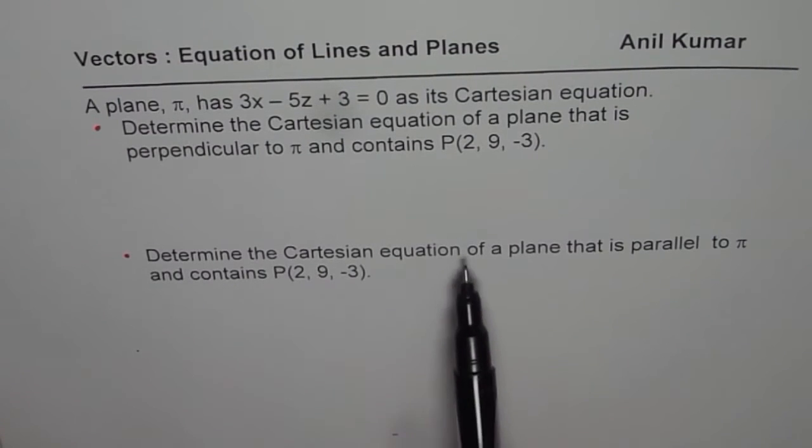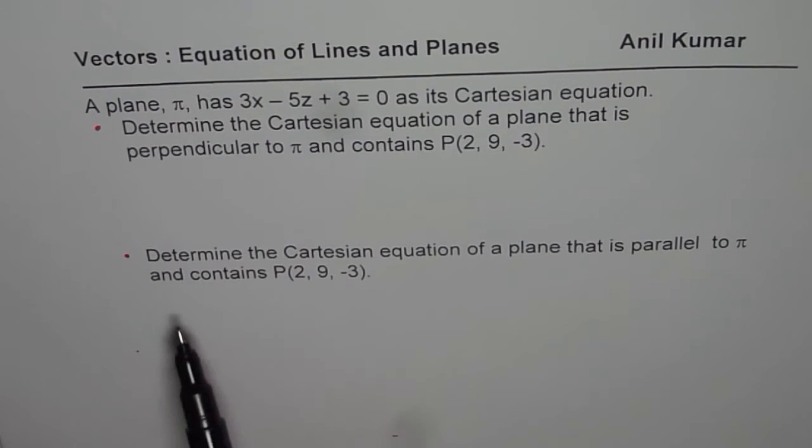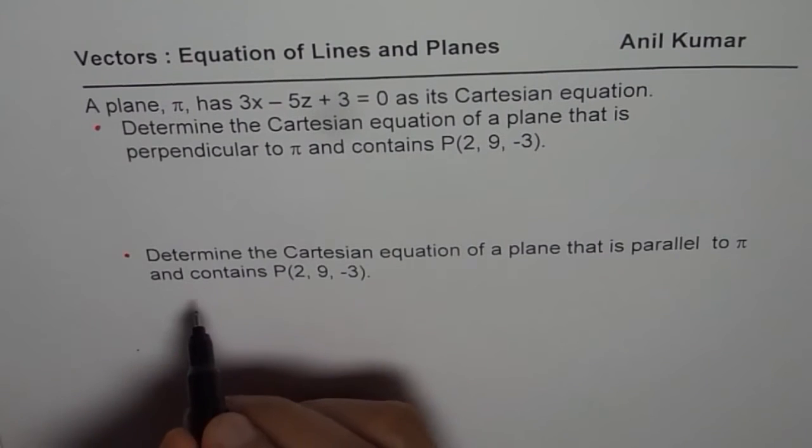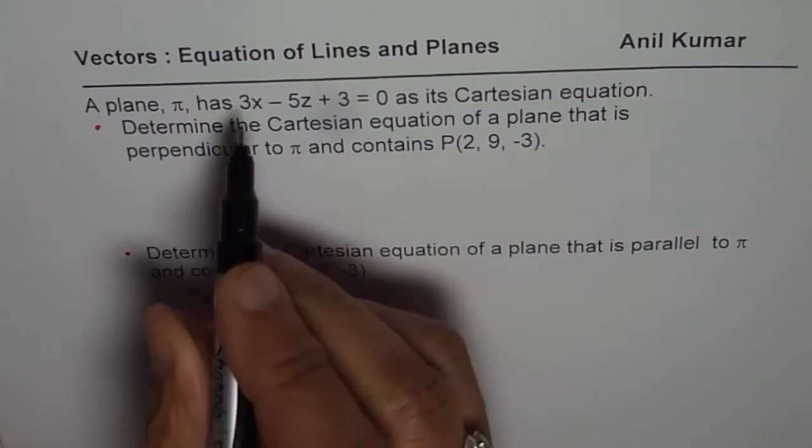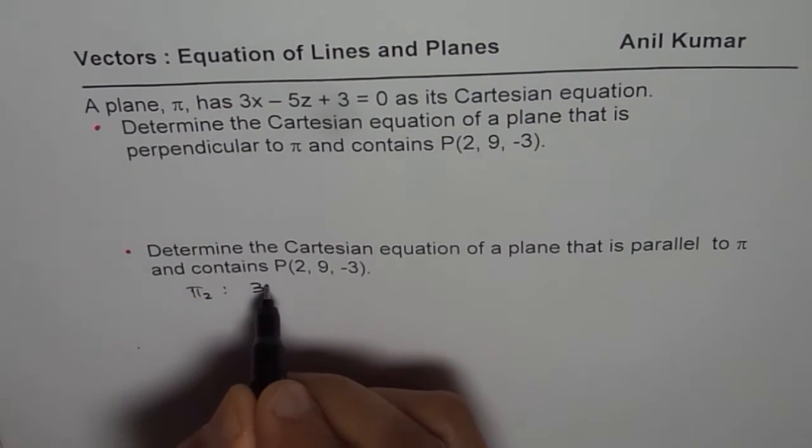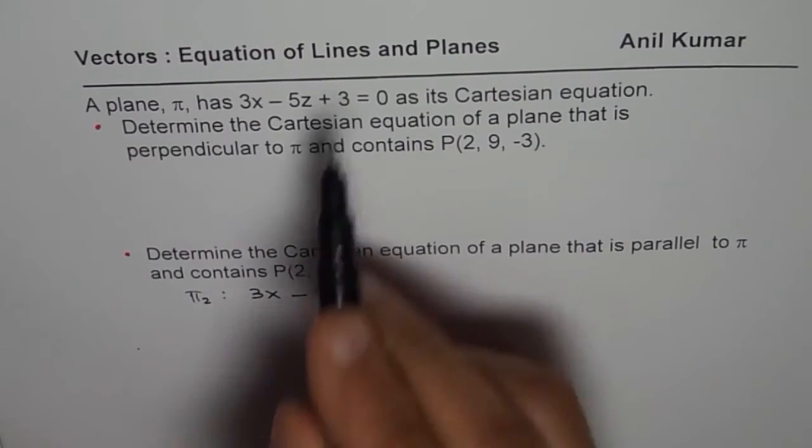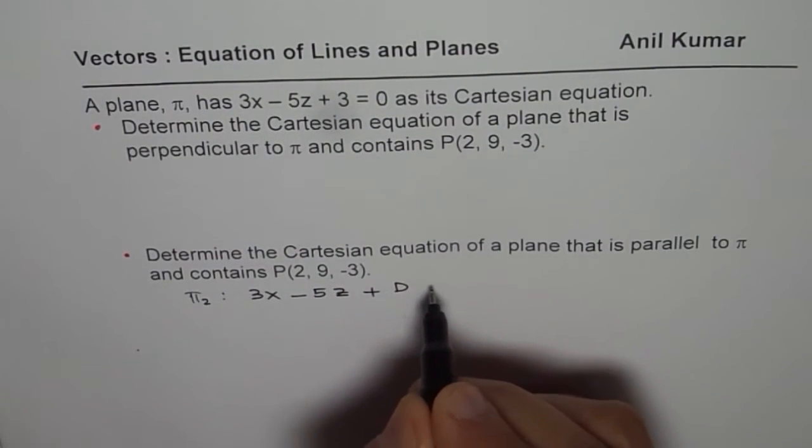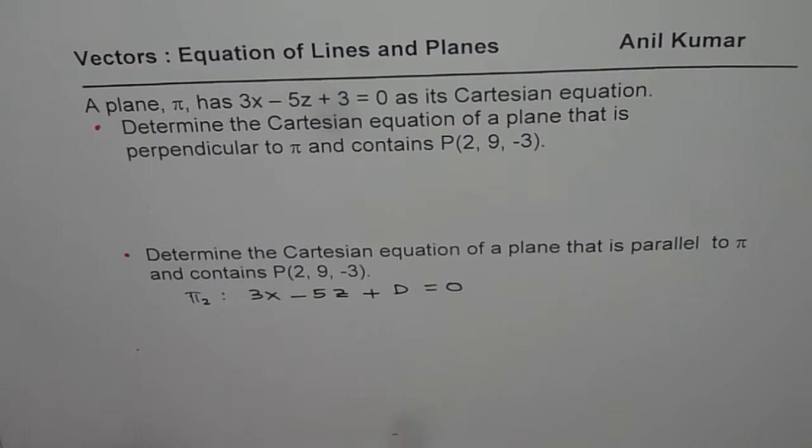I will begin from part 2. It says determine the Cartesian equation of a plane that is parallel to the given plane and contains the point. Parallel means same normal. So I can say that plane, let's say pi 2, should be equal to what? It will be equal to 3x minus 5z plus that number will change. That is how we make it parallel. D equals to 0. Now to find the value of D, we can substitute the point itself.